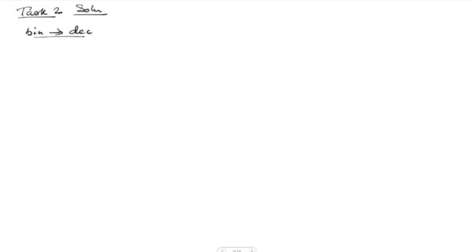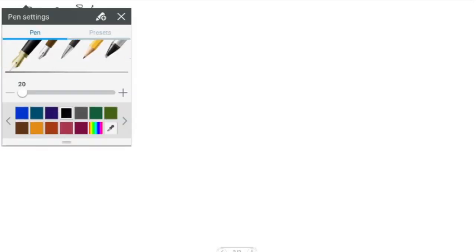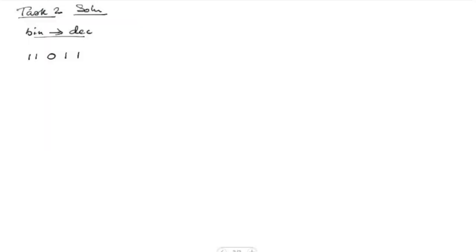Our first binary string is 1 1 0 1 1. The first thing we need to know here is the place value of these digits. The place value starts from the right end — on the right hand side we start with 0 and then going left we have 1, 2, 3, and 4.